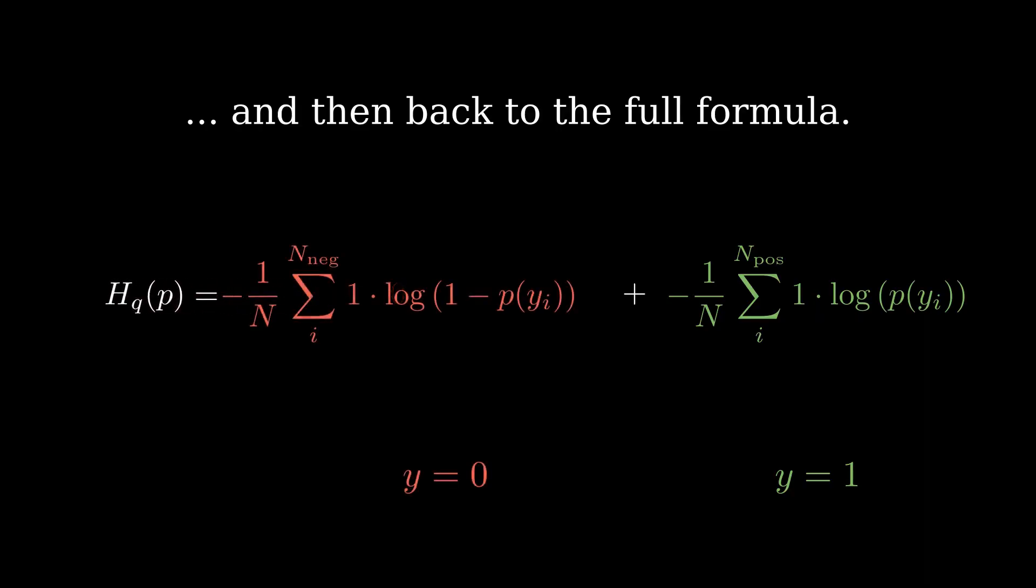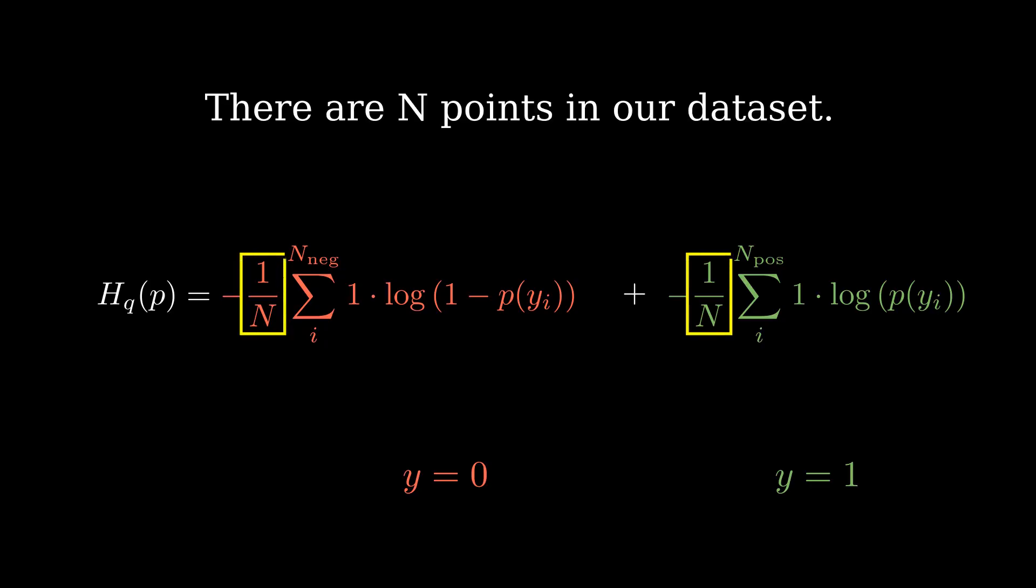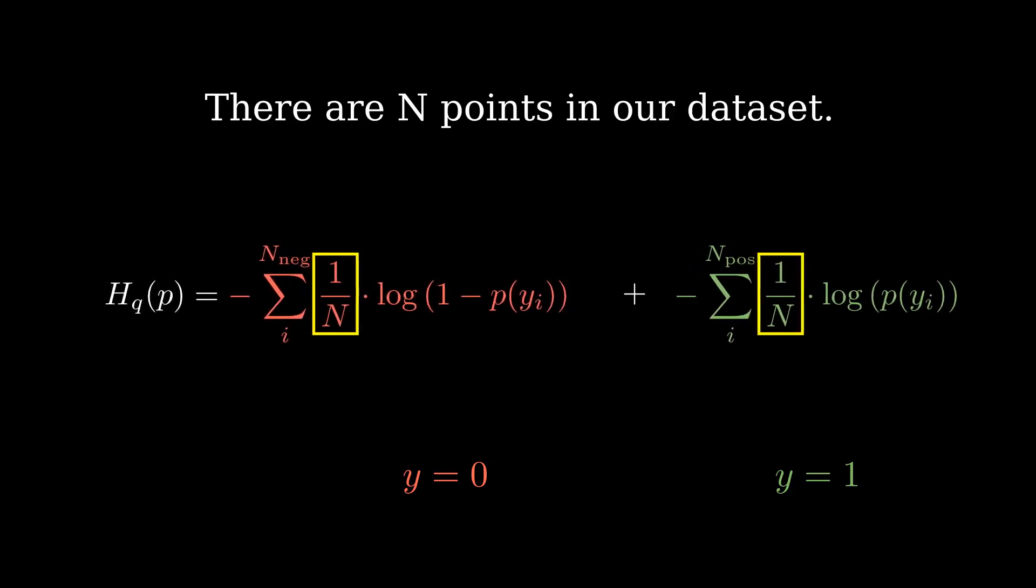If we add up both sides for negative and positive classes, we'll get our full formula back. Next, let's talk about the 1 over n terms. Since they are constants, we can move them inside the summations.